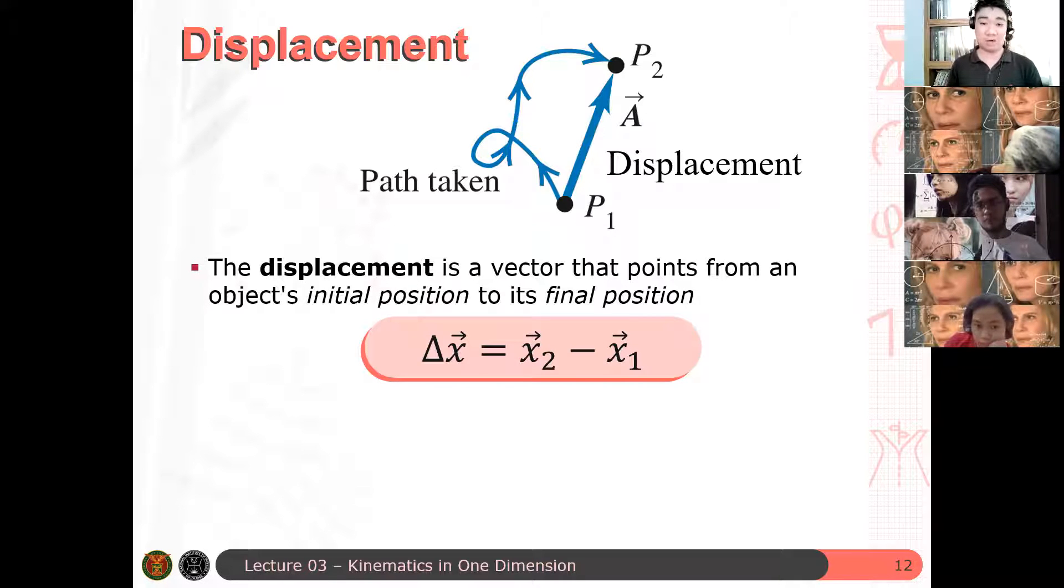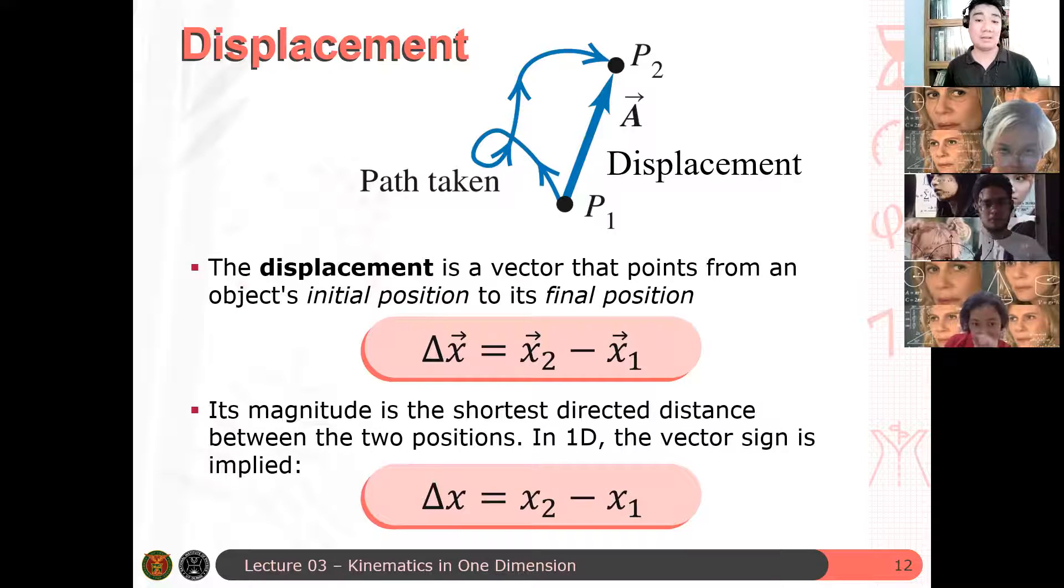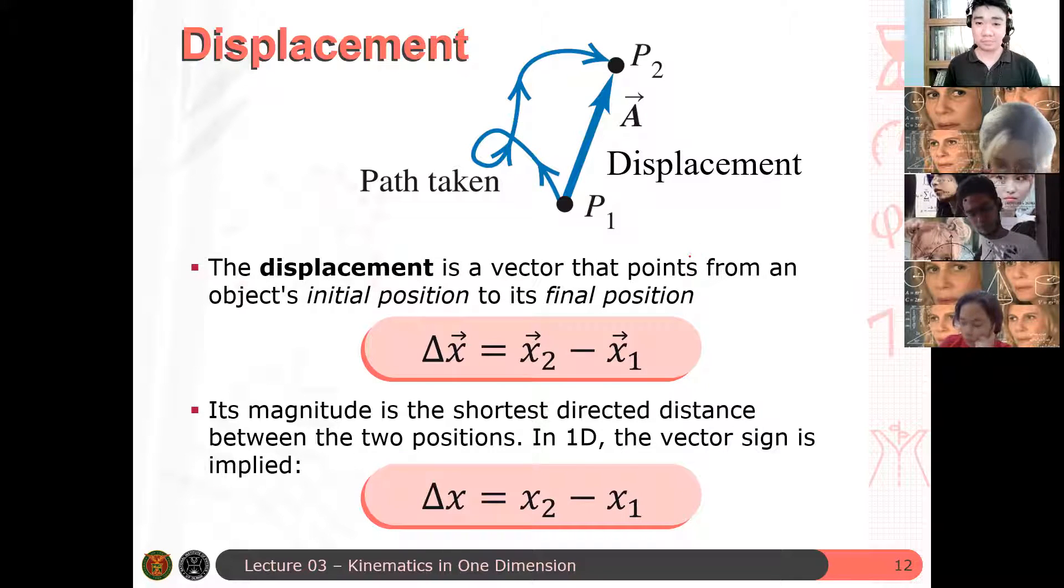So for 1D, hindi ganun kahirap yung magnitude ng displacement vector. Basically, difference lang din siya ng mga lengths, ng mga vectors for 1D. But for 2D and 3D, this becomes more different. Medyo masakikin, slightly more complicated yung ating definition ng displacement. So may tanong ba?